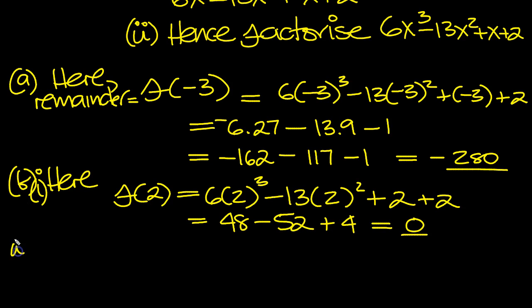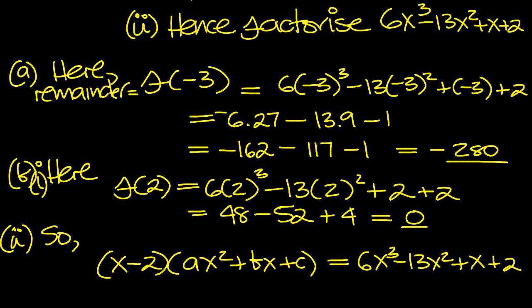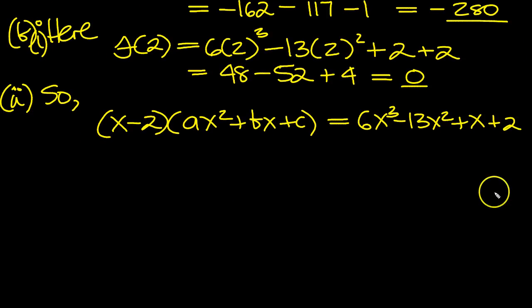So, if it's a factor we can write x minus 2 times the quadratic, ax squared plus bx plus c, must equal the cubic, mustn't it? Which is 6x cubed minus 13x squared, plus x plus 2. So we need to find a, b, and c, and then we can factorize that quadratic.